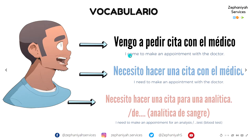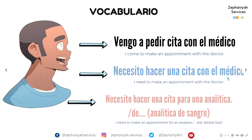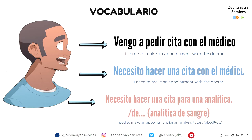Más vocabulario. Necesito hacer una cita con el médico — I need to make an appointment with the doctor. Or you can specify: necesito hacer una cita para una analítica — for a blood test, analítica de sangre, or a urine test, analítica de orina.